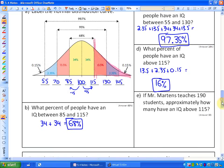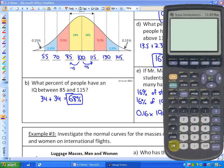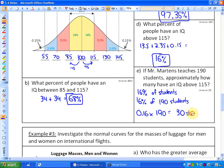And Part E is applying normal distribution to an actual population. So it says if Mr. Martens teaches 190 students, approximately how many have an IQ above 115? So we know that from the previous question, 16% of his students would. So 16% of his students. Or in other words, if we apply this to the population, it would be 16% of 190 students. And to calculate that, you would convert 16 into a decimal. So 16% into a decimal and multiply by 190 students. And on my calculator, you can see here that that is roughly, you would predict that I have roughly 30 students that have an IQ above 115.